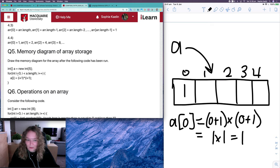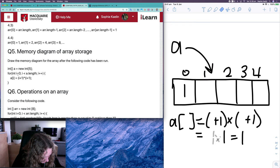When i is equal to one, so the next index, we've got a[1] is equal to one plus one times one plus one, two times two, we get four.